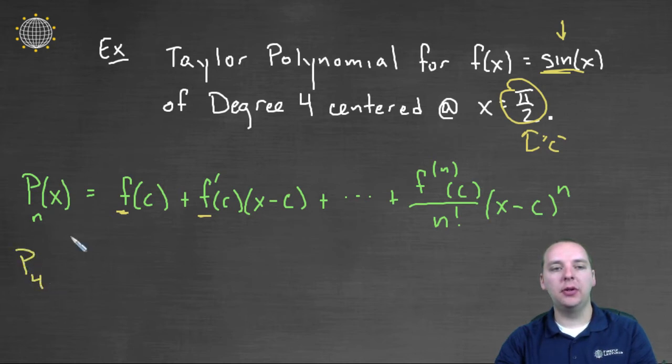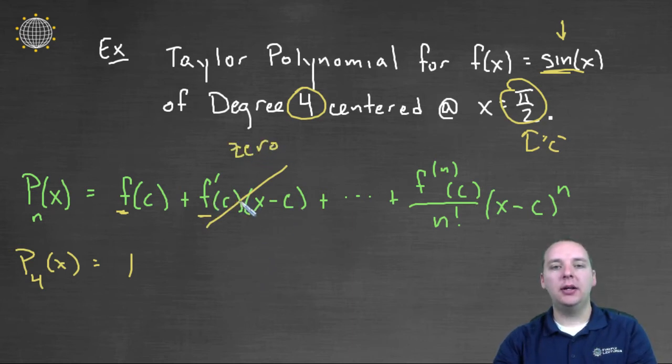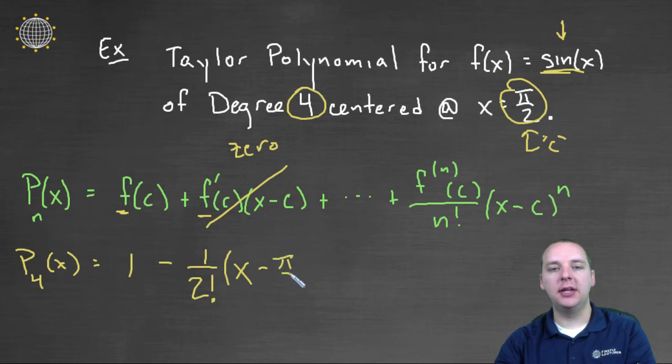We have p sub four, the polynomial of degree four that will approximate the sine function. It will be f of c, sine of pi over two, which was one, plus the derivative, which was zero, times x minus pi over two. So this term is gone. Plus f double prime at c, which was negative one, over two factorial, times x minus c, which is x minus pi over two, squared.